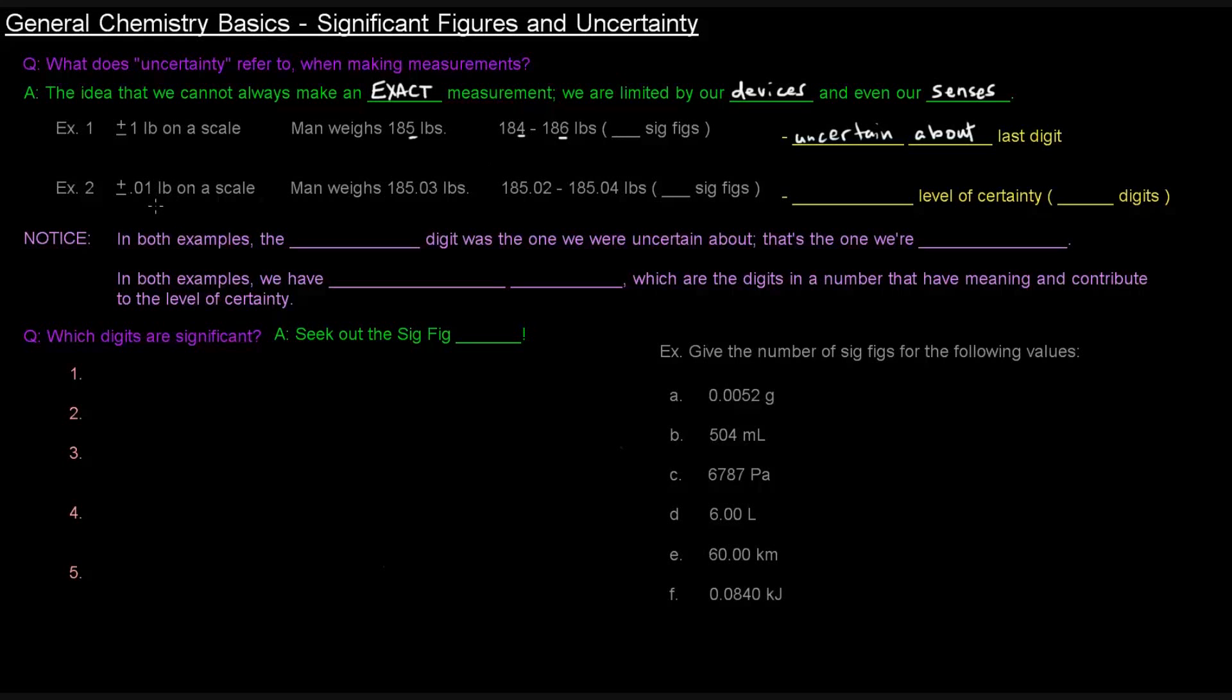We can have another example in which we have a scale that's accurate to 0.01 pounds. So the man might weigh 185.03 pounds, and the scale would read with the ending in 0.02, 0.03, or 0.04. And in this case, we have a higher level of certainty because we have more digits.